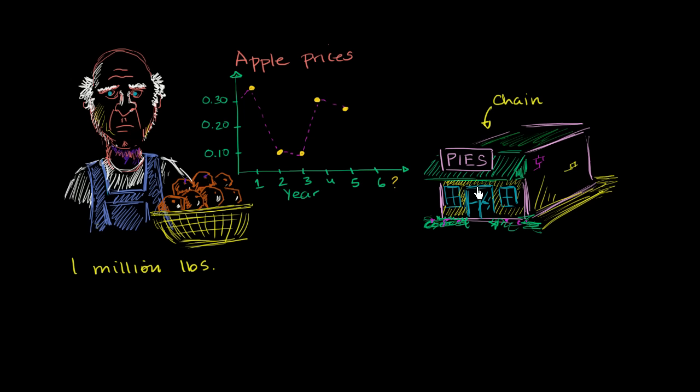So what they can do is agree ahead of time, regardless of what the actual market price ends up being after the harvest. They could agree to transact at a specified price. So they could set up a little contract right here.